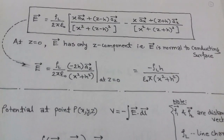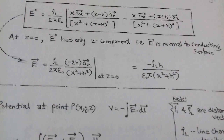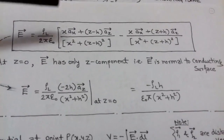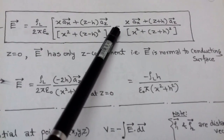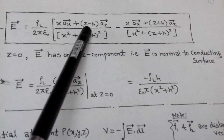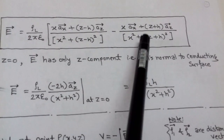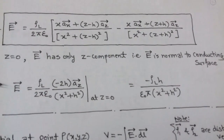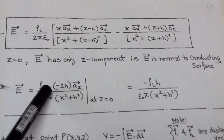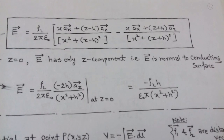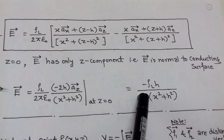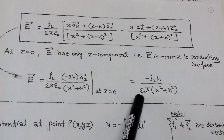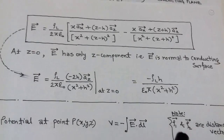At z equals 0, that is on the conducting plane, the electric field has only the z-component, because the x-component is cancelled due to the negative sign. At z equals 0, the z-component contributes minus h and minus h, giving minus 2h, and the factor of 2 cancels. So at z equals 0, the electric field equals minus rho_l*h upon pi*(x^2 + h^2).